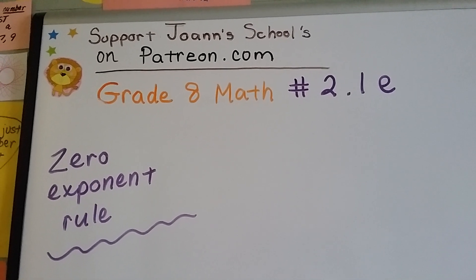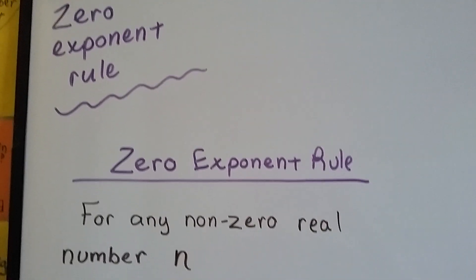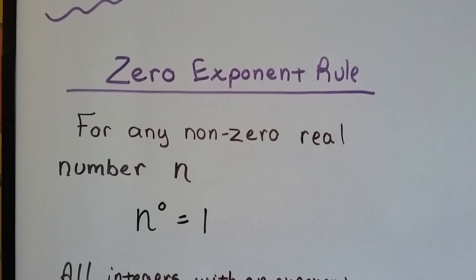Grade 8 math number 2.1e, the zero exponent rule. I said a few videos ago I'd explain the zero exponent rule, so here it is.